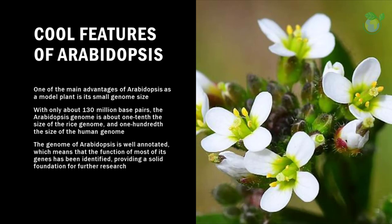Cool features of Arabidopsis. One of the main advantages of Arabidopsis as a model plant is its small genome size. With only about 130 million base pairs, the Arabidopsis genome is about one-tenth the size of the rice genome and one-hundredth the size of the human genome. This small genome size makes it relatively easy to study the function of individual genes and the genetic interactions between them. Additionally, the genome of Arabidopsis is well-annotated, which means that the function of most of its genes has been identified, providing a solid foundation for further research.